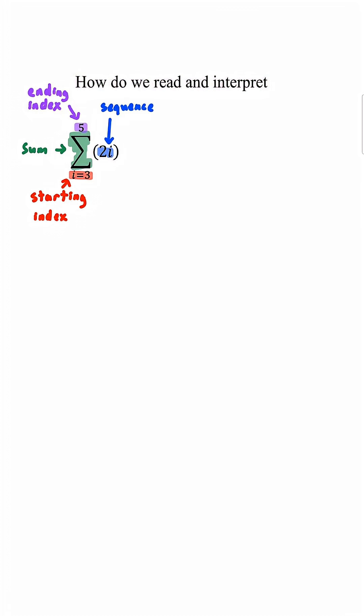So how do we read this? This is the summation from i equals 3 to i equals 5 of 2i.